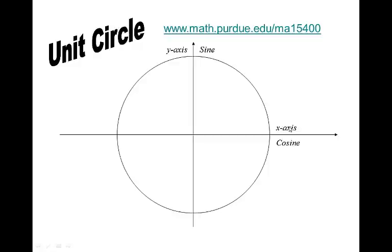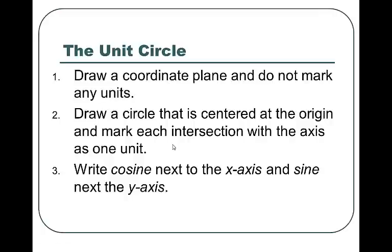Here's basically the unit circle. Notice I have the x-axis and cosine — always link those together — y-axis and sine. A unit circle is nothing more than a circle that has a radius of one unit. So we draw a coordinate plane, draw a circle centered at the origin, and mark each intersection with the x and y-axis as one unit. We write cosine next to the x and sine next to the y.